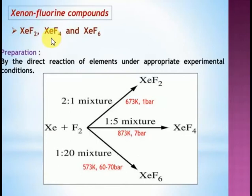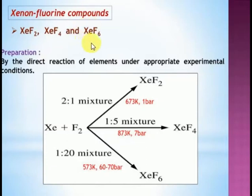Let's start our discussion regarding the fluorides of xenon. Xenon can form three types of fluorides: difluoride (XeF₂), tetrafluoride (XeF₄), and hexafluoride (XeF₆). Among these, xenon hexafluoride is the strongest oxidizing agent.